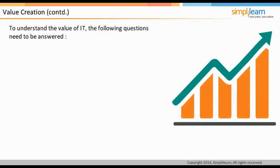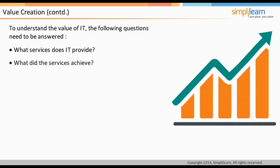To understand the value of IT, the following questions need to be answered. What service does IT provide? Services from the IT perspective should be linked to specific business activities and outcomes of customers. What did the services achieve? Customers will identify what they were able to do with the service and how important it was to them and their organization. What is the cost of a particular service? When a customer compares the service cost with what the service enabled them to achieve, they will determine how valuable the service is.